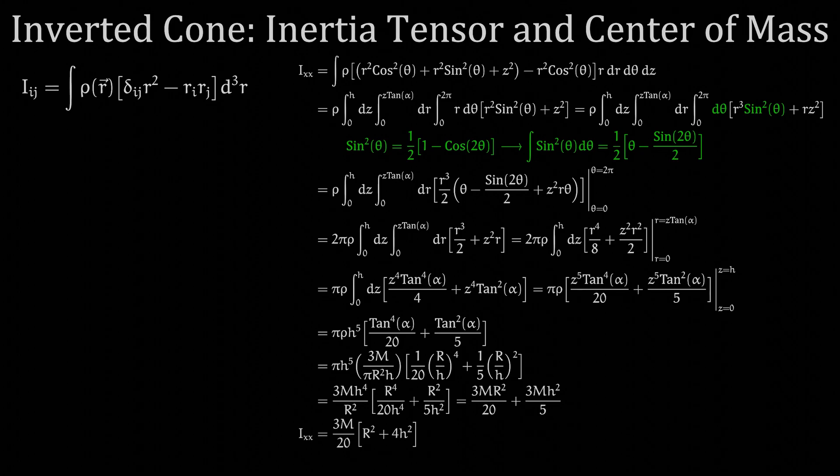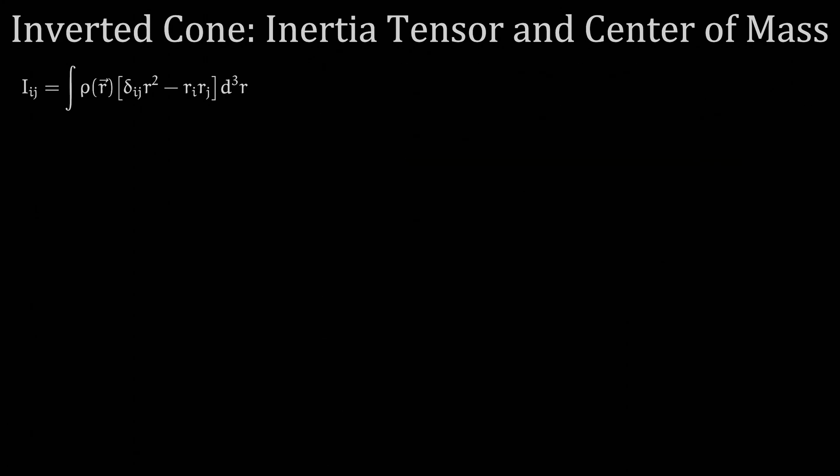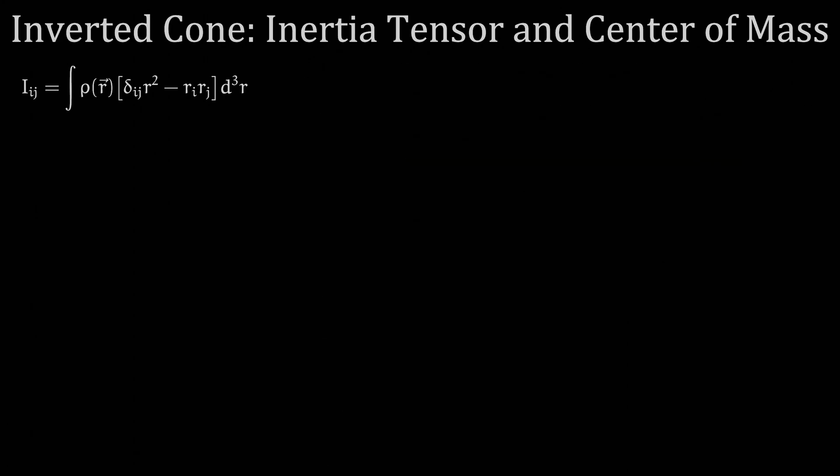The integral for Iyy is very similar, and in fact we get the same result as Ixx if one were to carry out the integration. You could also try and calculate all of the off-diagonal terms for this matrix, where the index i does not equal the index j, and you would find that they are equal to 0.